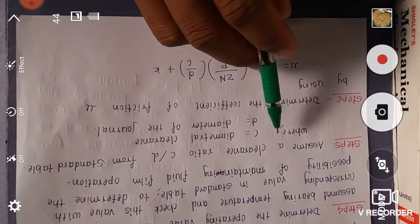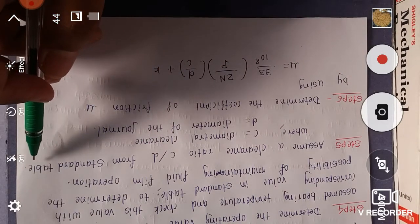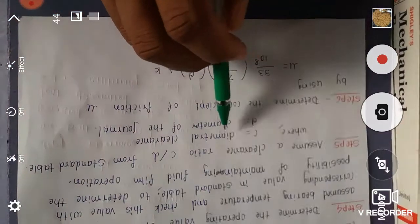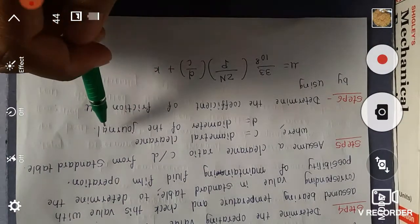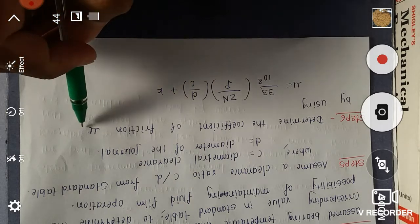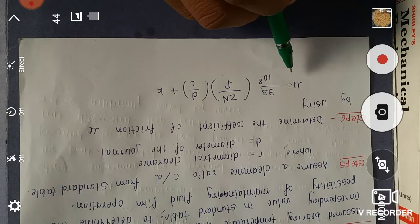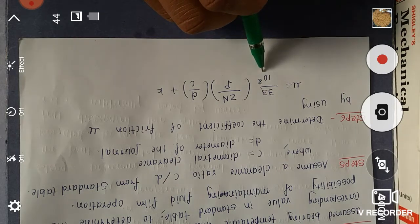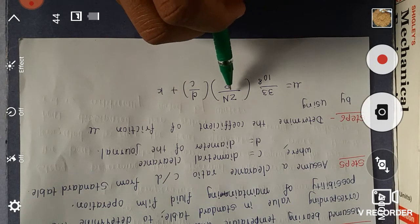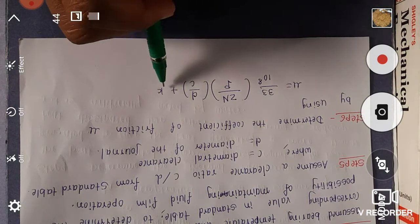Step 5: Assume a clearance ratio, that is C by D, from standard table where C is diameter clearance and D is diameter of the journal. Step 6: Determine the coefficient of friction mu by using this equation, which we already discussed previously, that is mu equals 33 upon 10 raise to 8 into bracket Zn upon P then into D upon C plus K.